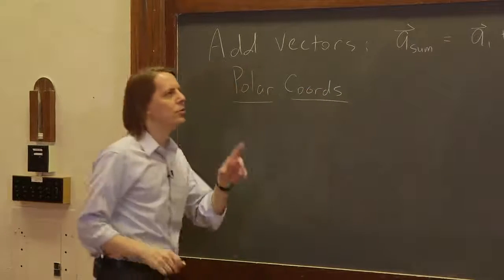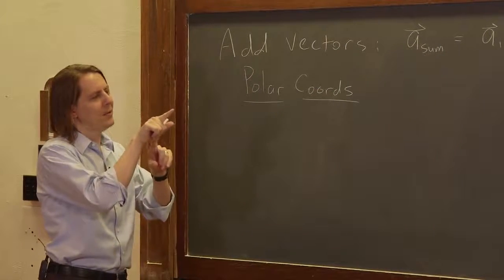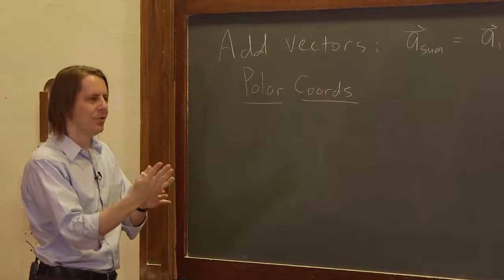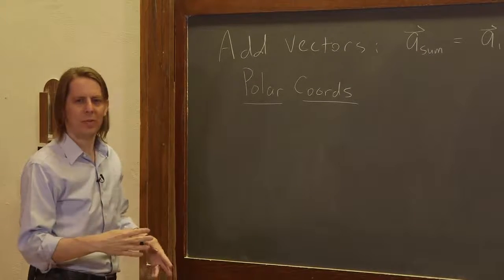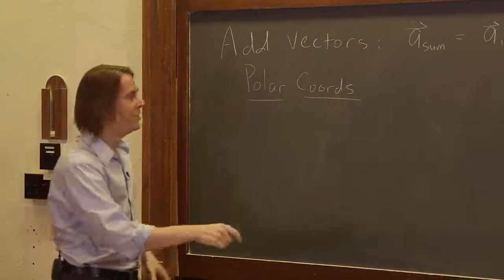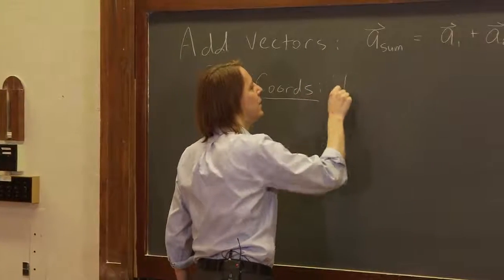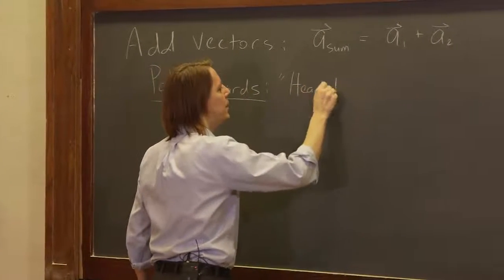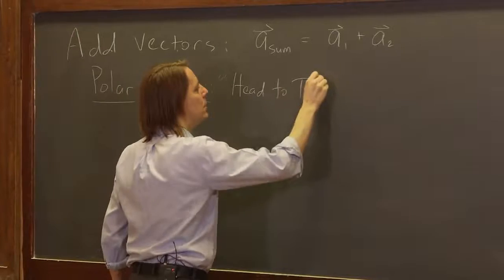If you're given two magnitudes and two angles, how would you combine those in polar coordinates without going to Cartesian? This is where you do what's called head to tail.